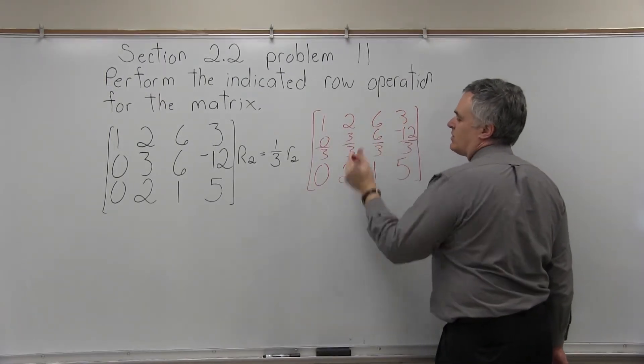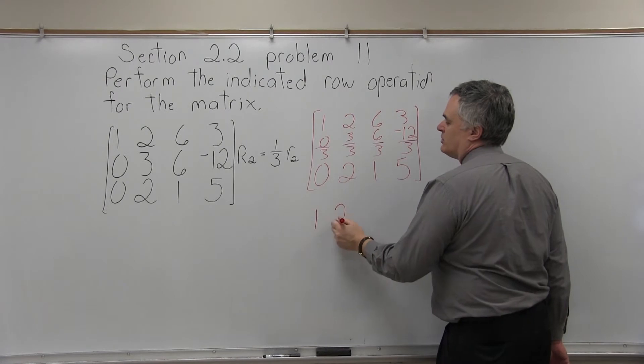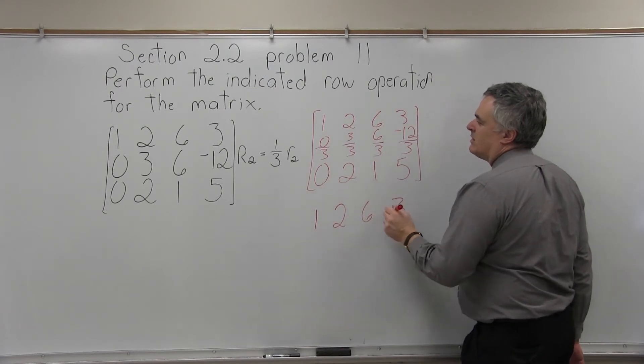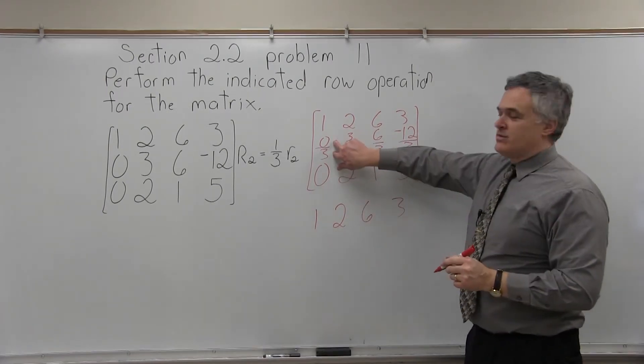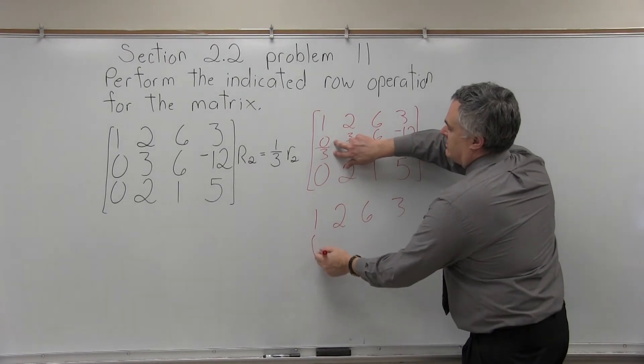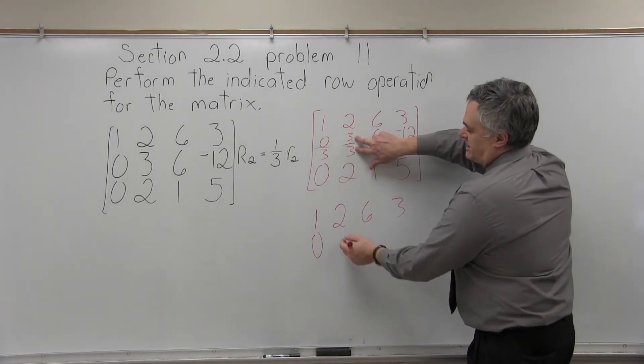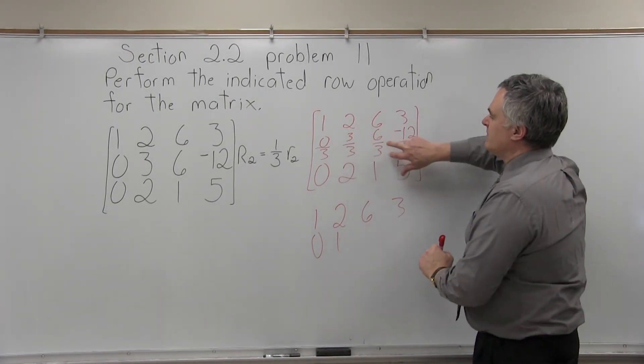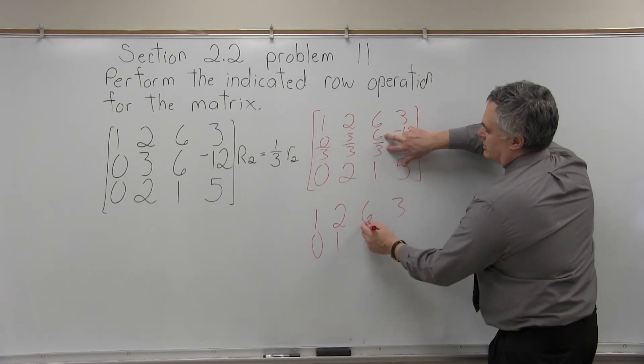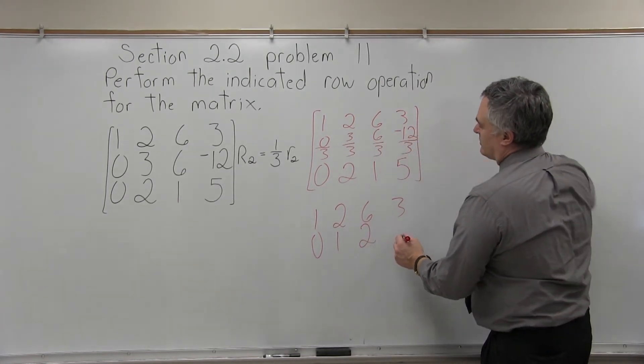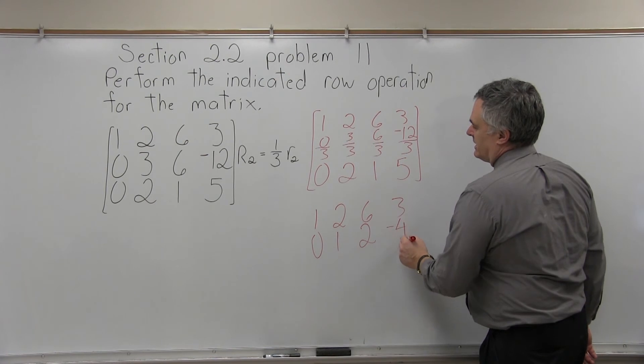So for my final answer, the top row can stay 1, 2, 6, 3. But now in the middle row, 0 over 3 simplifies to 0, 3 over 3 simplifies to 1, 6 over 3 reduces to 2, and finally, negative 12 over 3 reduces to negative 4.